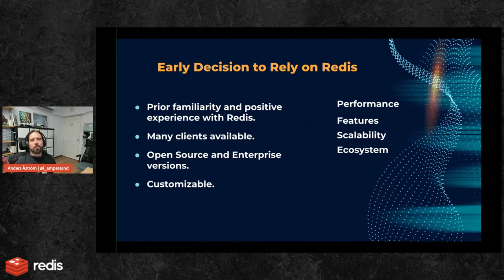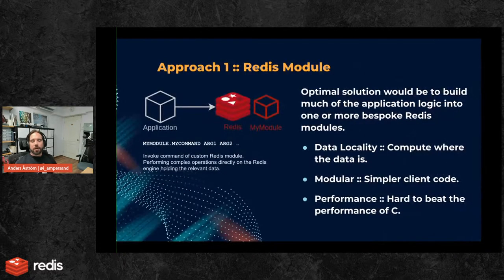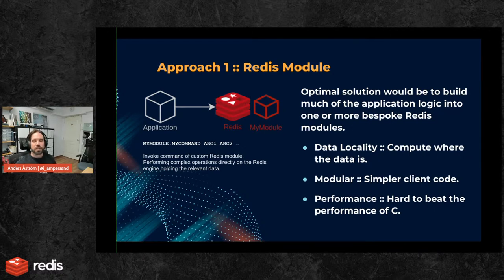Latency was a major concern, so Redis was already top of mind. Redis has many clients available, open source and enterprise versions, it's highly customizable, and we know about the performance and features. My ideal scenario was to extend Redis with a Redis module — basically a way of adding code to Redis, adding new commands, running server-side code, and interacting with the key space.